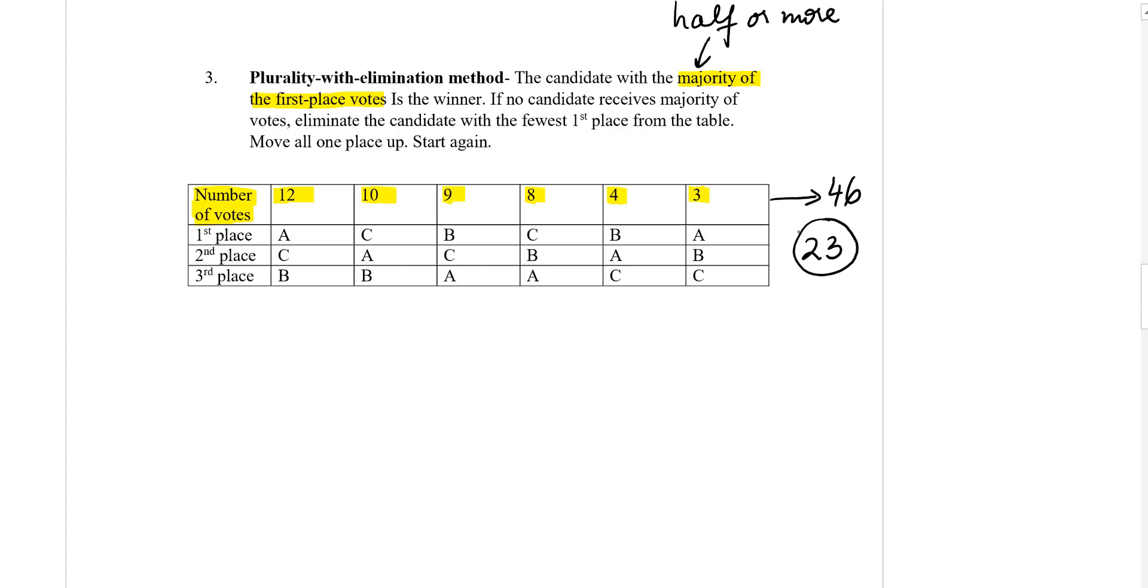So let's take a look at our table. On the first place we have these people. Anna, or A in our case, it doesn't necessarily mean that we need to have just people. We can have anything. Anna has 12 plus 3, which is 15 votes, because I have Anna here and here as the first place.